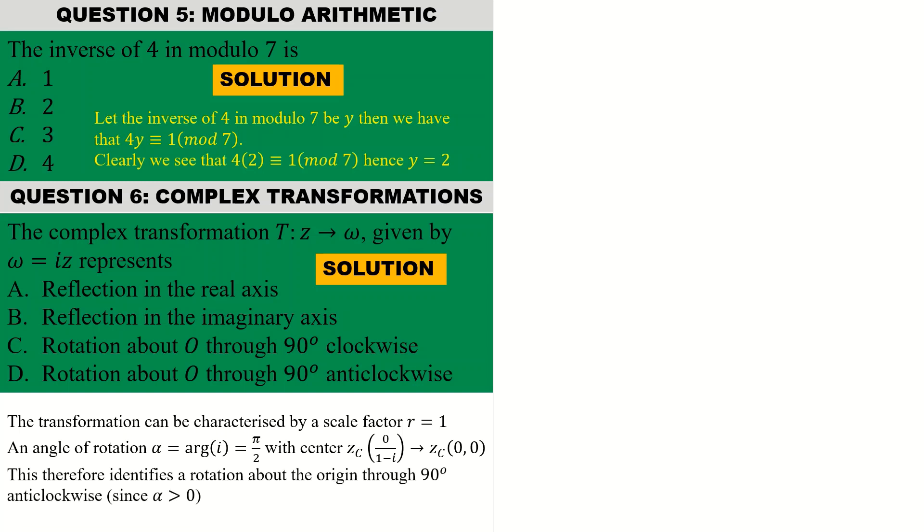This therefore describes a rotation about the origin through 90 degrees, which is anti-clockwise since my angle of rotation is positive. If my angle of rotation was negative, it would be clockwise. If you face difficulties in this topic, a video is being displayed on your screen and you can click on it and follow up the lesson on complex transformations.